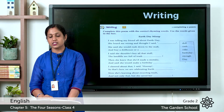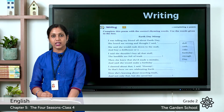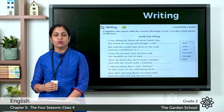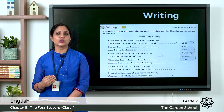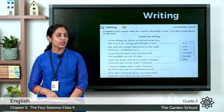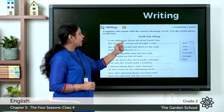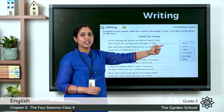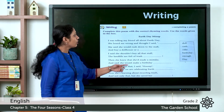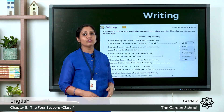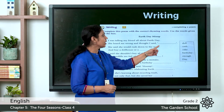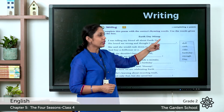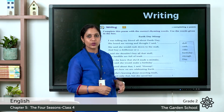The help words in the box are: doll, cash, cake, birthday, enough, and day. The last word of the first line is 'Earth Day,' so we find a rhyming word — birthday matches Earth Day. So the line reads: she heard me wrong and thought I said birthday.